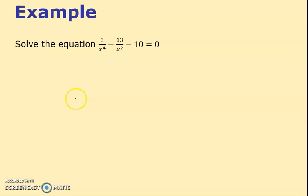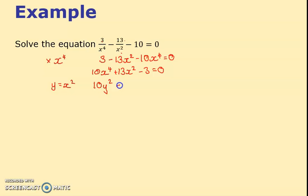This doesn't look quite so nice, I don't like the fractions. You might get into a habit of multiplying everything by the biggest power on the bottom. If I multiply everything by x to the 4, this becomes 3 minus 13x squared minus 10x to the 4. Tidy it up: 10x to the 4 plus 13x squared minus 3. I'll write y equal to the middle thing which will be x squared, so I've got 10y squared plus 13y minus 3 equals 0.